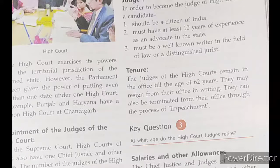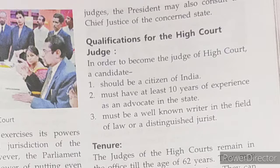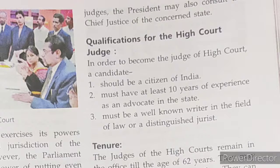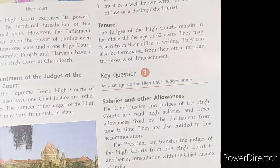The Chief Justice of a High Court is appointed by the President of India in consultation with the Chief Justice of the Supreme Court and the Governor of the state. Other judges of the High Court are appointed by the President in consultation with the Chief Justice of the Supreme Court, the Chief Justice of the High Court, and the Governor of the state. To become a judge of a High Court, a candidate should be a citizen of India, should have 10 years of experience as an advocate of a High Court or more such courts in succession, or at least 10 years' experience as a judicial officer in the territory of India, and must be a well-known writer in the field of law or a distinguished jurist.